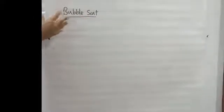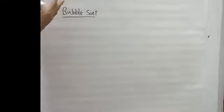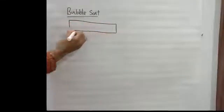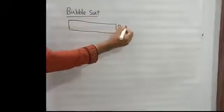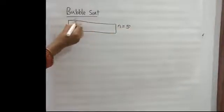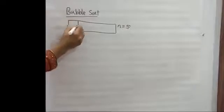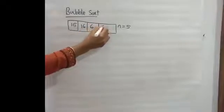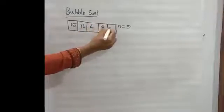In this video, we will discuss the basic principles of bubble sort, the algorithm, and the code. In the first example, we will discuss the number of elements. n is equal to 5. The elements are 50, 60, 6, 8, and 5.